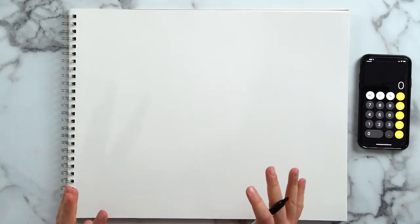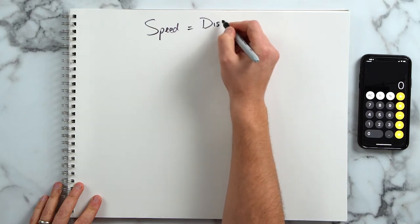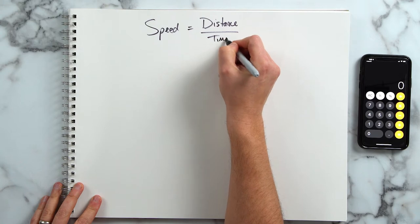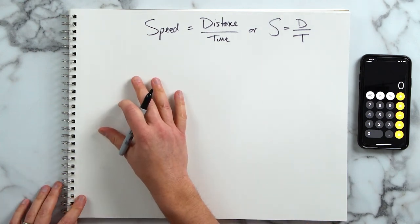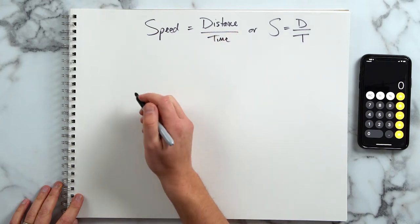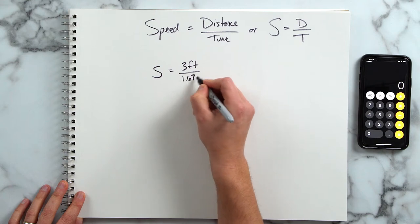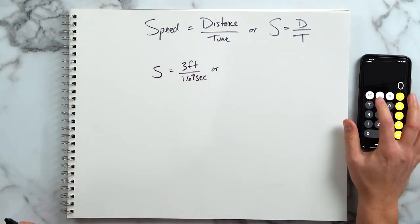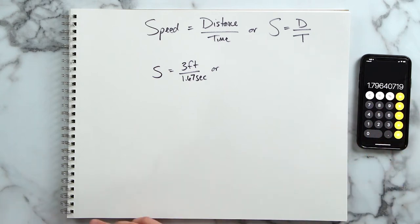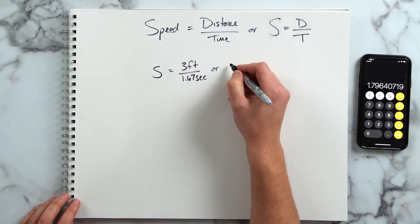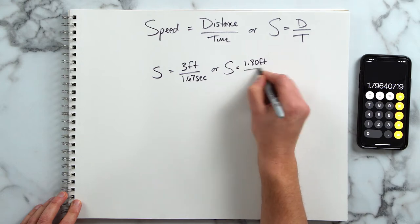Let's determine the speed of the billiard ball. In order to do this, we're going to use the equation for speed, which is speed equals distance divided by time — s = d/t. The ball on ramp three traveled a distance of three feet in 1.67 seconds. So the speed is three feet divided by 1.67 seconds — three divided by 1.67 is 1.796, which we'll round to 1.8. So the ball on ramp three was going 1.8 feet per second.